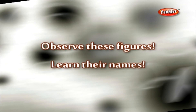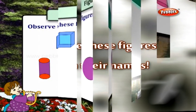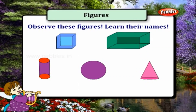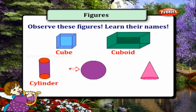Observe these figures and learn their names. This is a cube. This is a cuboid. This is a cylinder. This is a sphere. And this is a cone.